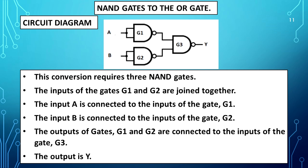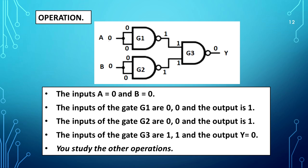NAND gates to OR gate circuit diagram is shown. This conversion requires three NAND gates. The inputs of gates G1 and G2 are joined together. Input A is connected to the inputs of G1, and input B is connected to the inputs of G2. The outputs of G1 and G2 are connected to the inputs of G3. The output is Y. Operation: When A=0 and B=0, the inputs of G1 are 0,0 and output is 1; the inputs of G2 are 0,0 and output is 1; the inputs of G3 are 1,1 and output Y equals 0.